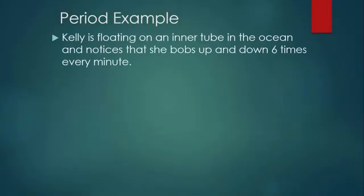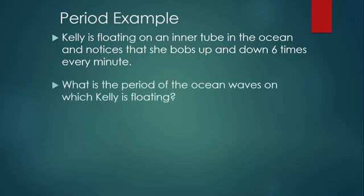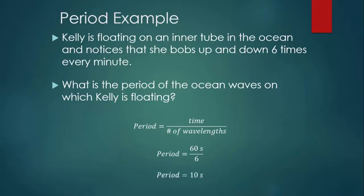Let's take a look at an example. Kelly is floating on an inner tube in the ocean, and she notices that she bobs up and down six times every minute. So each time she bobs up and down, that's one complete oscillation. That's one wavelength. Period is the total time that has passed divided by the number of wavelengths or oscillations produced within that time. So the time she measured was one minute, 60 seconds, divided by the six complete oscillations she observed gives us a period of 10 seconds. So she bobbed up and down in 10 seconds, and then bobbed up and down again in another 10 seconds, and so on and so forth.